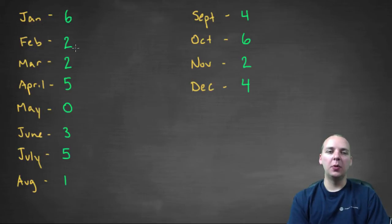But we'll try to make it as painless as possible. So the month codes go as follows. January is 6, February is 2, March is 2, April is 5, May is 0, June is 3, July is 5, August is 1, September is 4, October is 6, November is 2, December is 4.